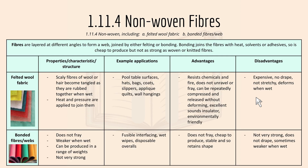Section 1.11.4 covers non-woven fibers: fibers are laid at different angles to form a web, joined by either felting or bonding. Bonding joins fibers with heat or solvent, so it is cheap to produce but not as strong as woven or knitted fibers. For felted wool fabric, scaly fibers of wool or hair become tangled as they are rubbed together when wet.